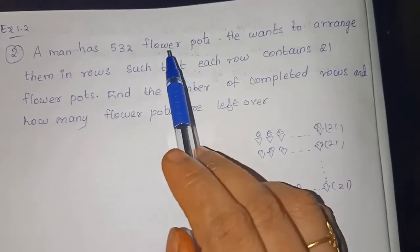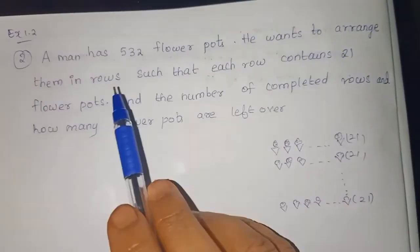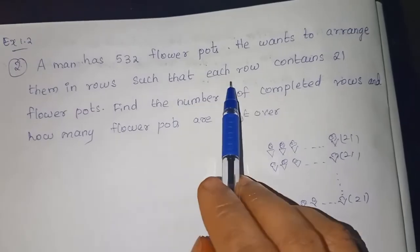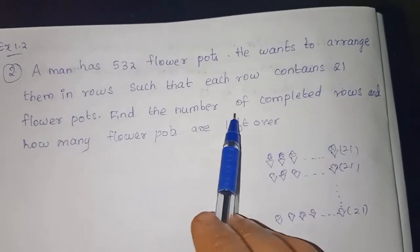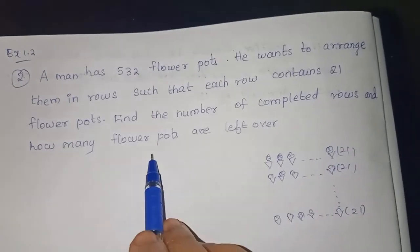A man has 532 flower parts. He wants to arrange them in rows such that each row contains 21 flower parts. Find the number of completed rows and how many flower parts are left over.